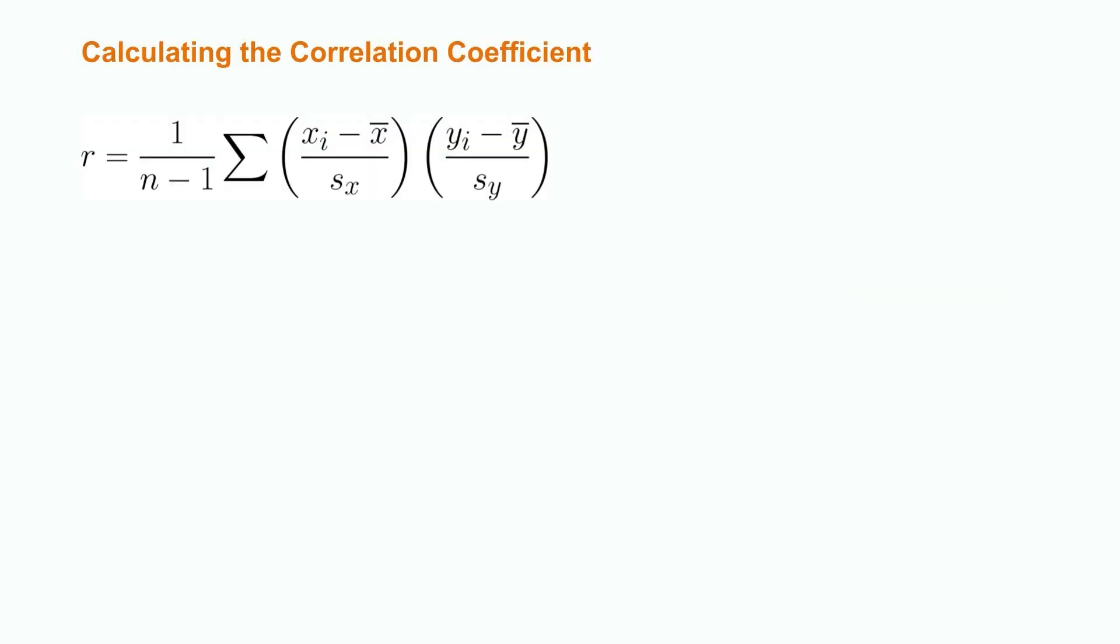The formula for the correlation coefficient, r, is 1 over n minus 1 times the sum of each value of x minus the mean of x divided by the standard deviation of x times each value of y minus the mean of y divided by the standard deviation of y.